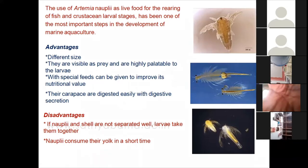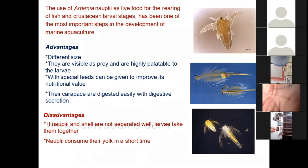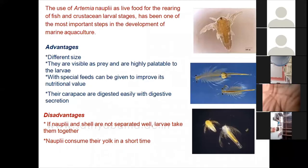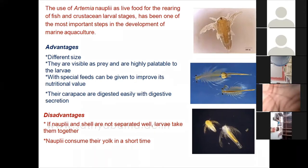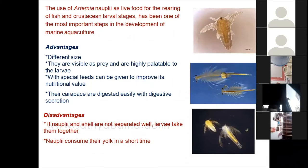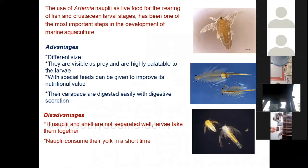The disadvantages are that we cannot easily separate the shell if the cyst is not properly hatched. If unfertilized cysts or those with the outer cover not properly removed are given to post larvae or fish larvae, it is unhealthy for the animal. Also, the yolk is consumed within a short period — within 24 hours of becoming a nauplii, we have to feed it to the target animal, because if we allow the nauplii to grow more than 24–48 hours, the yolk material is completely absorbed by the artemia itself for its own growth.